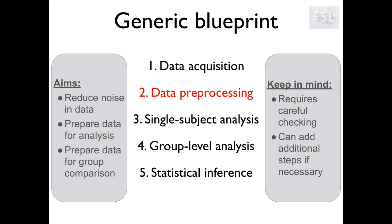Data preprocessing steps are all the steps that reduce noise in the data in many ways — could be doing motion correction, brain extraction, temporal filtering. We do preprocessing to prepare our data for further analysis and ultimately for group comparisons. In this sense, registration is a preprocessing step too. We need to keep in mind that all these steps require careful checking by looking at the reports from the tools and at the data itself. We may need to add additional steps depending on the MRI modality and on the type and amount of noise.